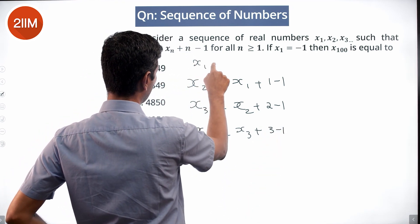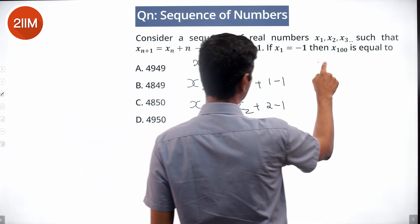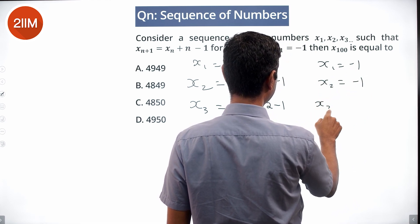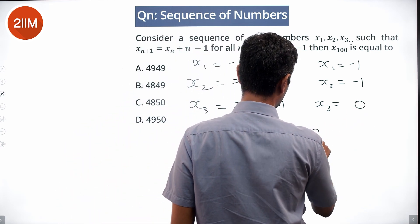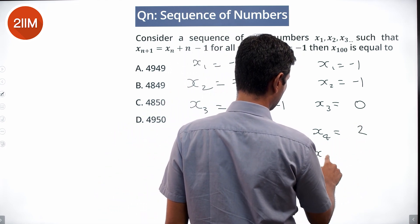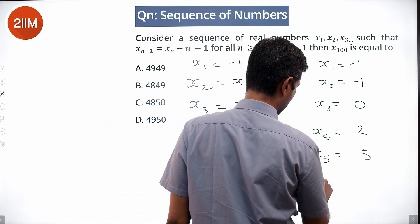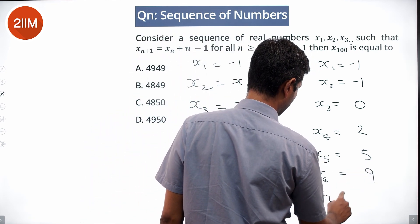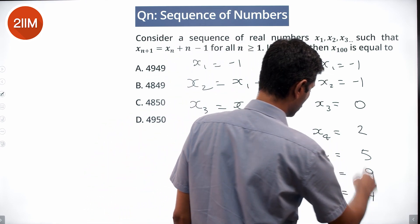So x1 = -1, x2 is x1 + 0 which is also -1, x3 is x2 + 1 which is 0, x4 is x3 + 2 which is 2, x5 is x4 + 3 which is 5, x6 is x5 + 4 which is 9, x7 is x6 + 5 which is 14, and so on.